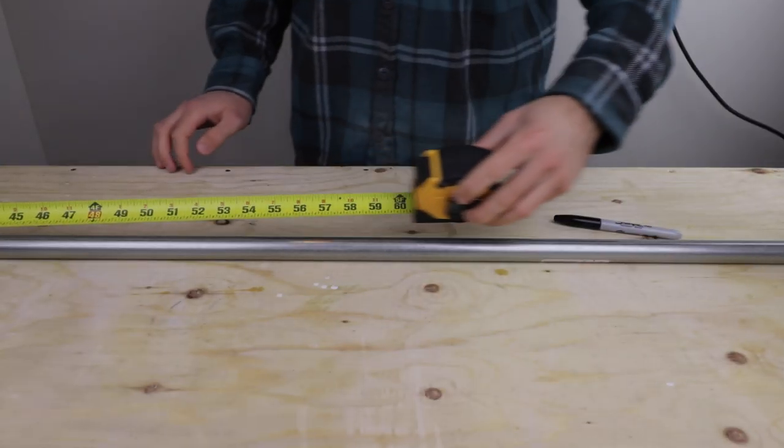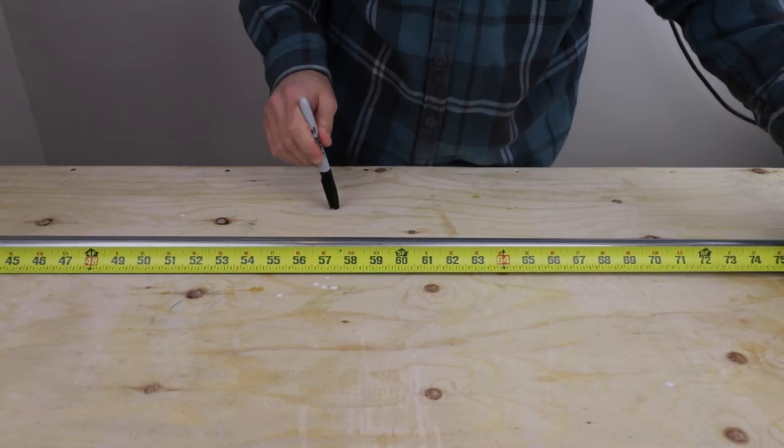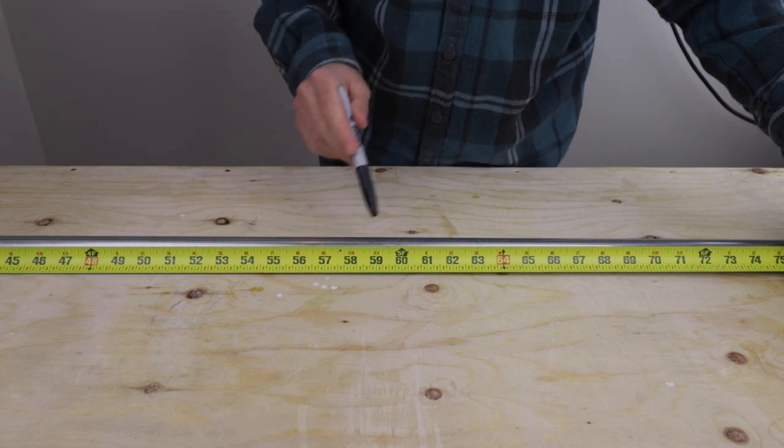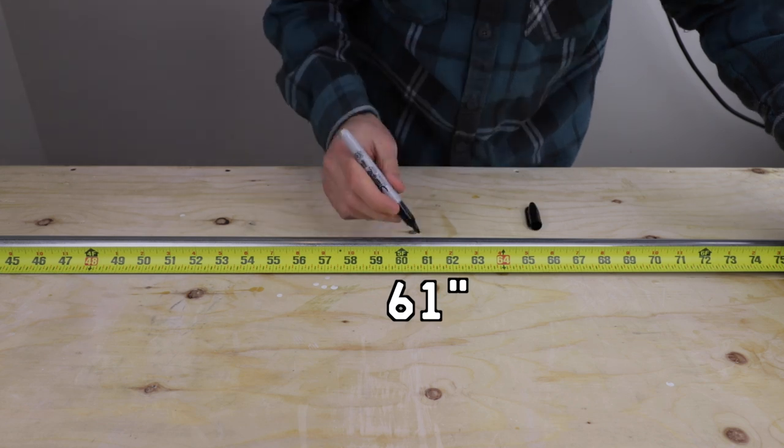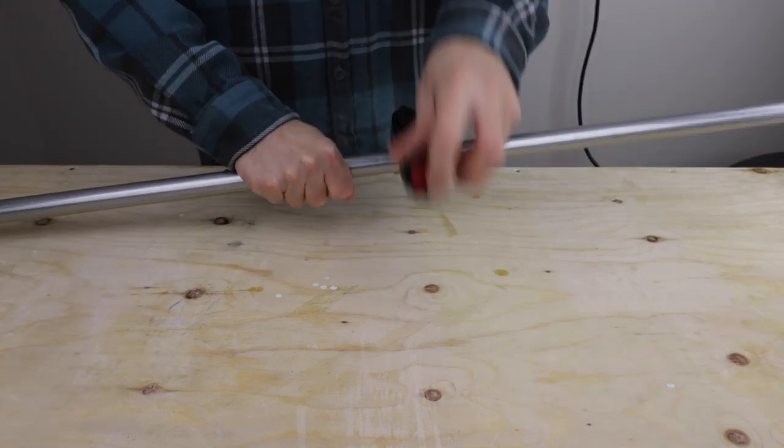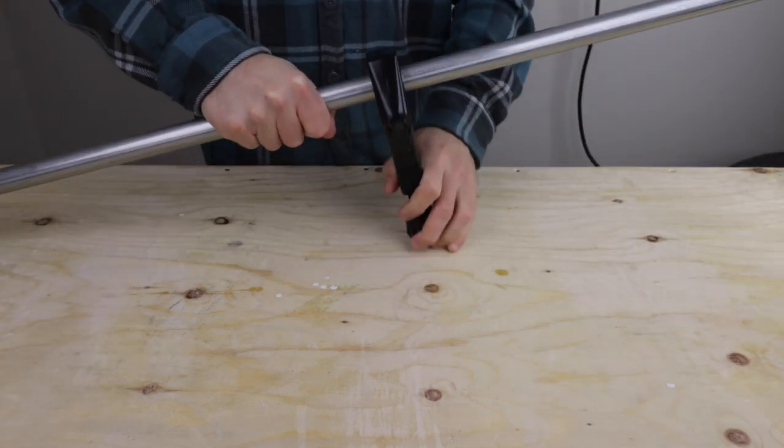While that dried, I measured out the height of the lamp. The average height of a floor lamp is typically between 58 inches and 64 inches. I chose to split the difference with a height of 61 inches. I then used a pipe cutter to trim the conduit to its final length.